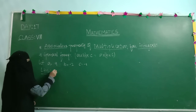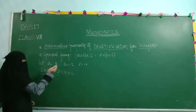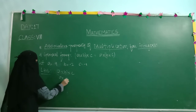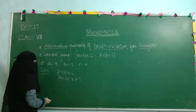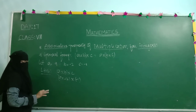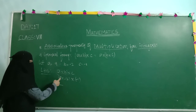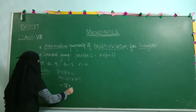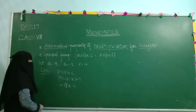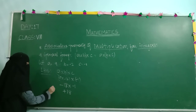LHS: A into B, in bracket, into C. Substituting: 9 into minus 2, in bracket, into minus 1. First solving the bracket — 9 into minus 2: plus into minus gives minus, so 9 times 2 is 18, giving minus 18. Then minus 18 into minus 1: minus into minus gives plus, so 18 times 1 is 18. LHS equals 18.